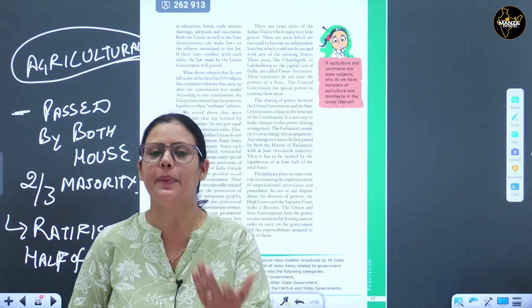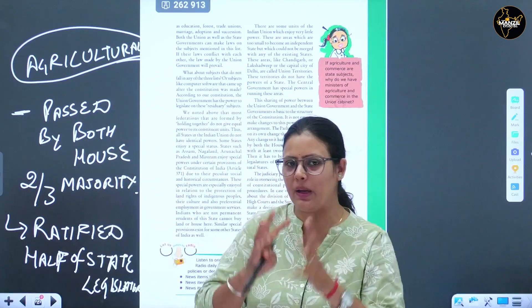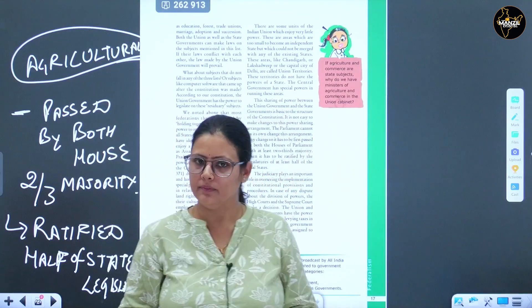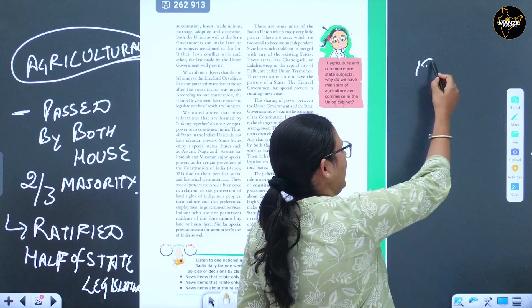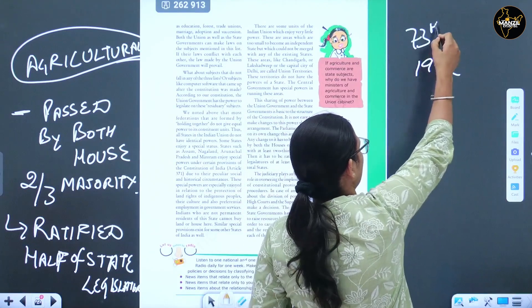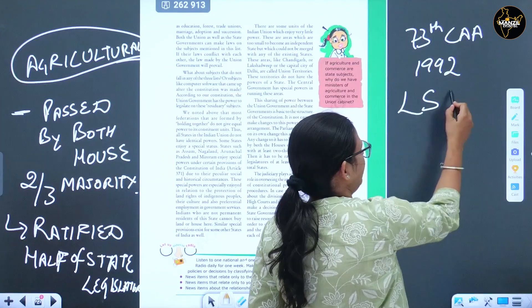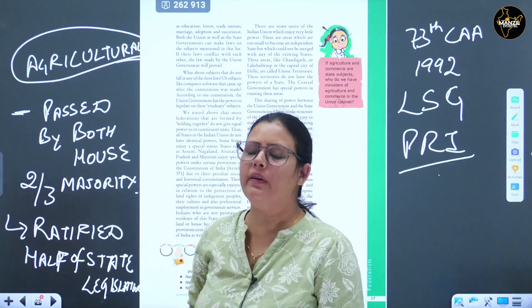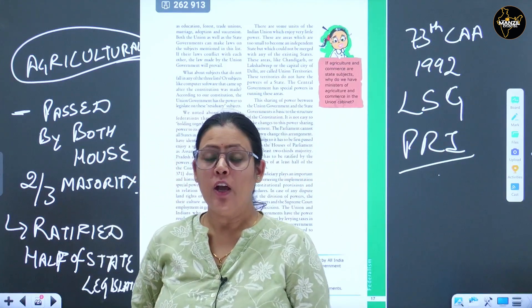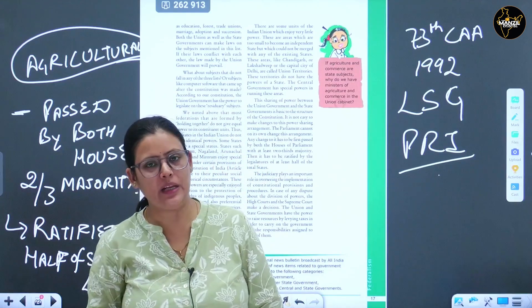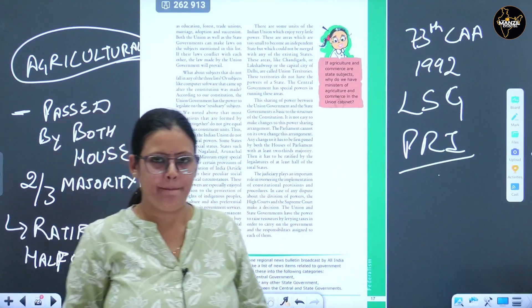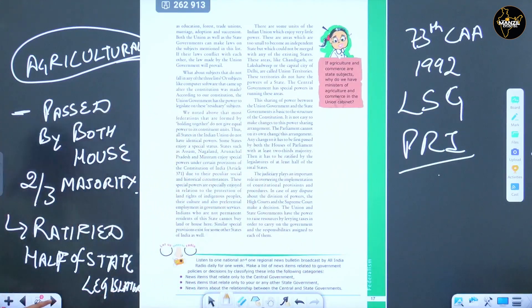Whether any action by the central government against the state list is constitutionally valid is not decided by the central government - it is the final decision of the Supreme Court. So the judiciary has the power of final interpretation. All features of federalism are present in our country. The level of government - center and state - was established, and later in 1992 through the 73rd Amendment Act, local self-government was also added through the Panchayati Raj Institutions. Their powers are derived from the constitution, cannot be changed unilaterally, and interpretation is with the courts. Finances are also separate.